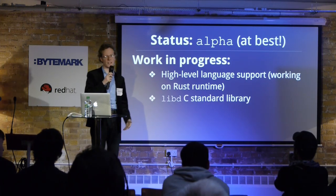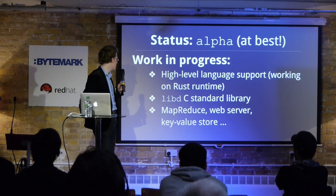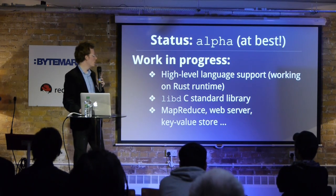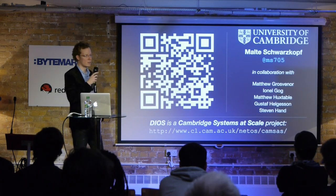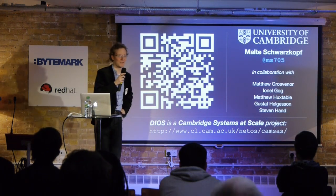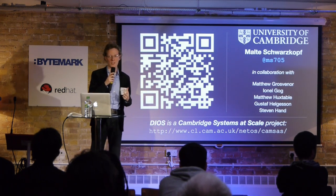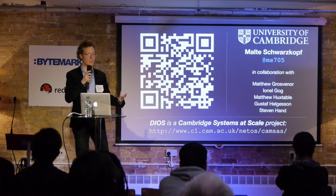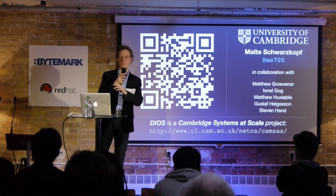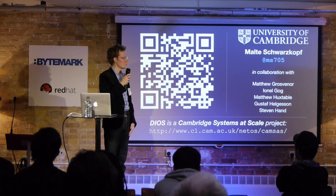We're also working on a standard library that has a bunch of libc functionality to make life a little bit easier. MapReduce I showed you; there's also a web server, key-value store, and other demo applications. And that's it, pretty much. It's all research, so don't expect to deploy this in production anytime soon. But it's a sort of investigation into what we can do if we redo the abstractions completely and don't try to be backwards compatible with POSIX. You can still run your legacy processes alongside, but the DIOS processes are completely compartmentalized in the DIOS world. Thank you.